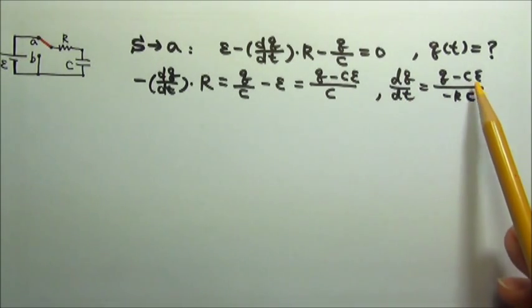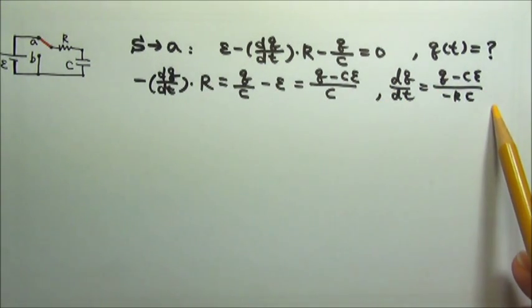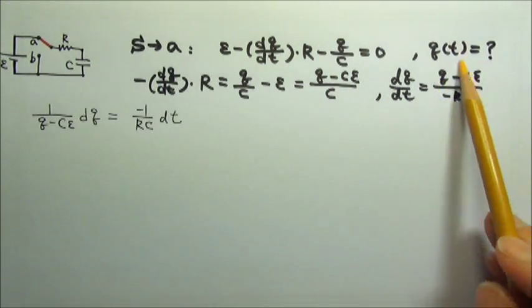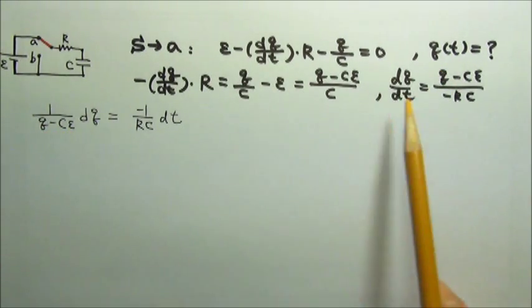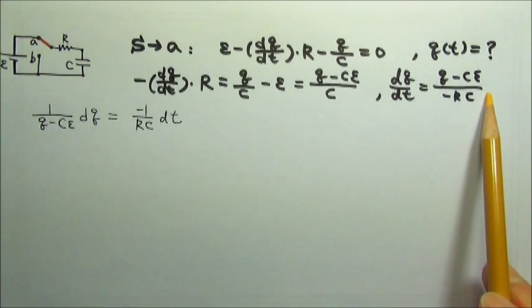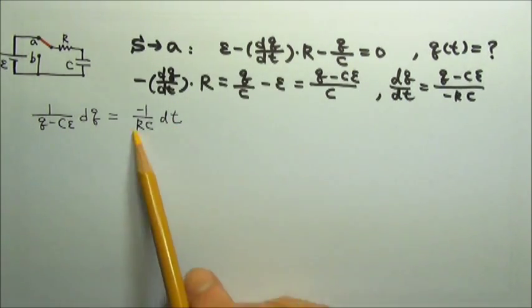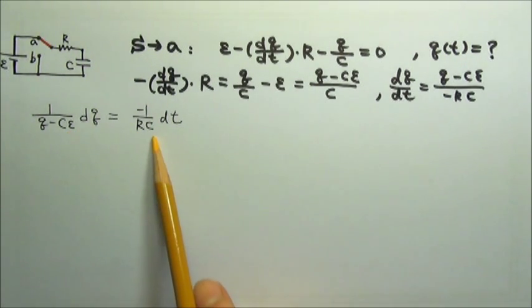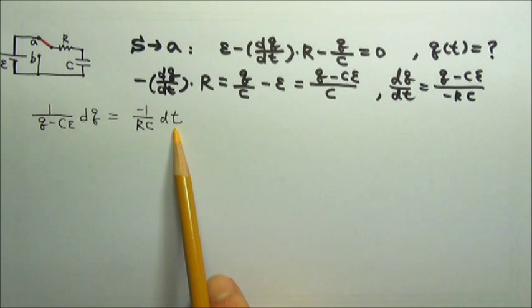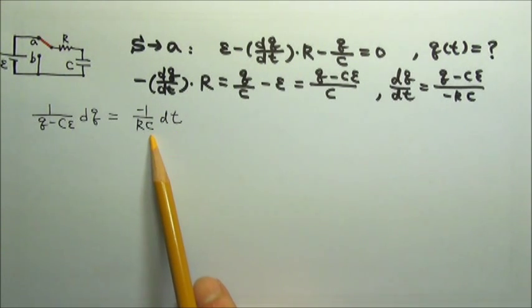We just have to move all the q terms to one side and t terms to the other side. When I move this over, it becomes 1 over q minus Cε. When I move dt to the other side, I get dt. Technically, this negative 1 over RC can go on either side, but I'm putting it on the t side because I know in the end I will have e to the negative t over RC. So this can be convenient.